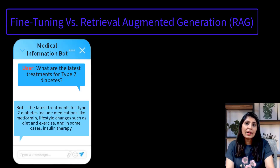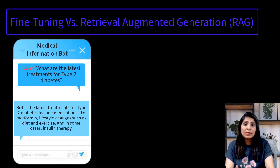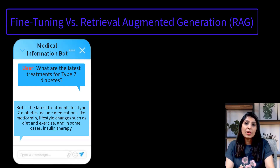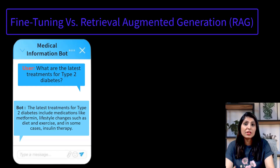Now let's see how RAG handles this. Retrieval augmented generation, or RAG, allows us to provide external, up-to-date knowledge to the model. This means even if the base LLM hasn't been trained on the very latest information, RAG can supply that latest information to the model and the model can generate answers based on it. The process is simple: we upload the latest information, the retriever performs its functionality, provides the retrieved document to the LLM, and then the LLM generates a response.